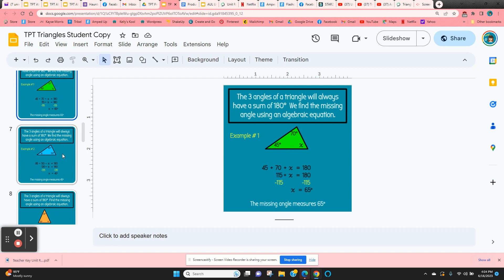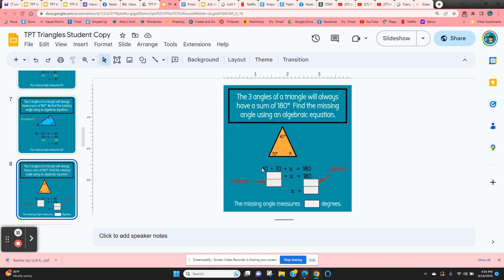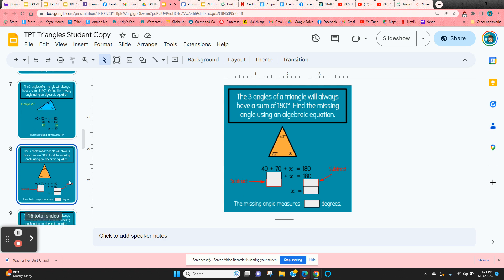So students are going to be doing this on their own. Here's another example. When they get to slide eight, then they have to fill in the missing parts of the equation. So it starts out giving them the equation. Here they just have to combine like terms, and then they have to subtract. And then that will give them the missing angle.